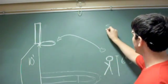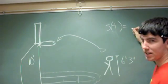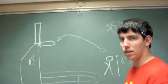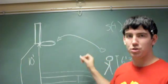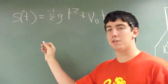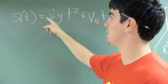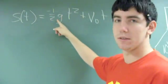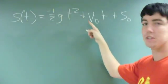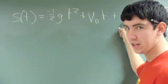Now what we're going to do is take the position function that we learned in physics, and we're going to use it to calculate how high Mario's shot went and how much time. Here we have the position function from physics: S of T equals negative one-half times the force of gravity, T squared, plus the original velocity, times T, plus the original position.